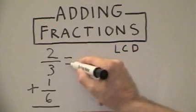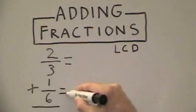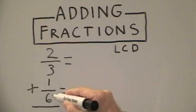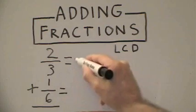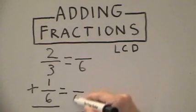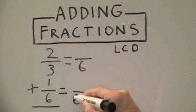If you did it correctly, you should have got an LCD of six. We put six as the denominator for both fractions.